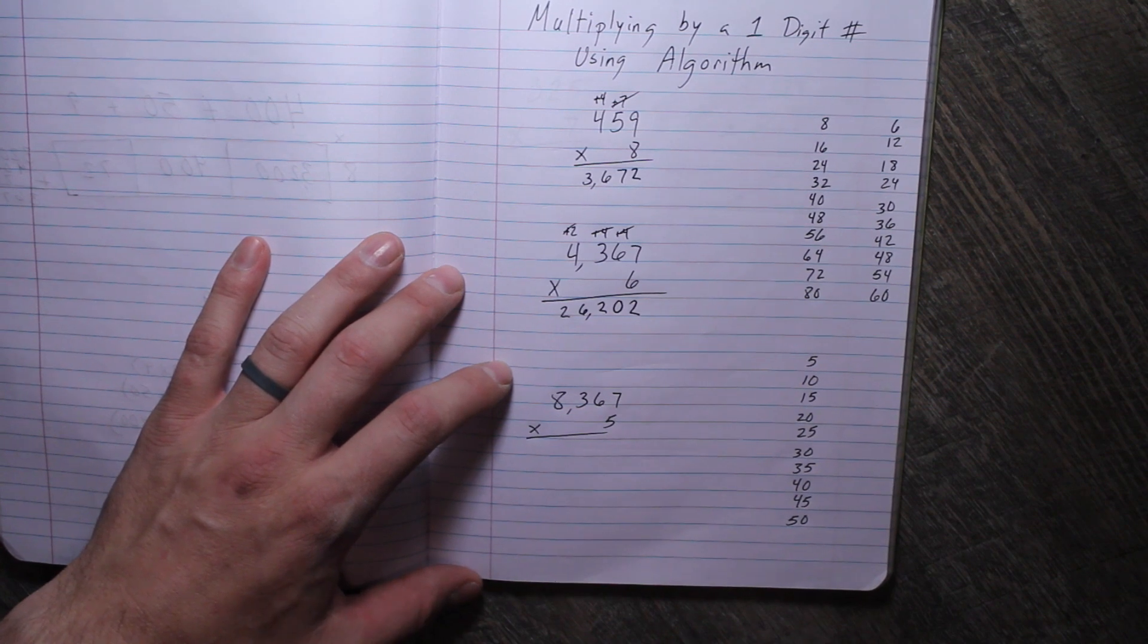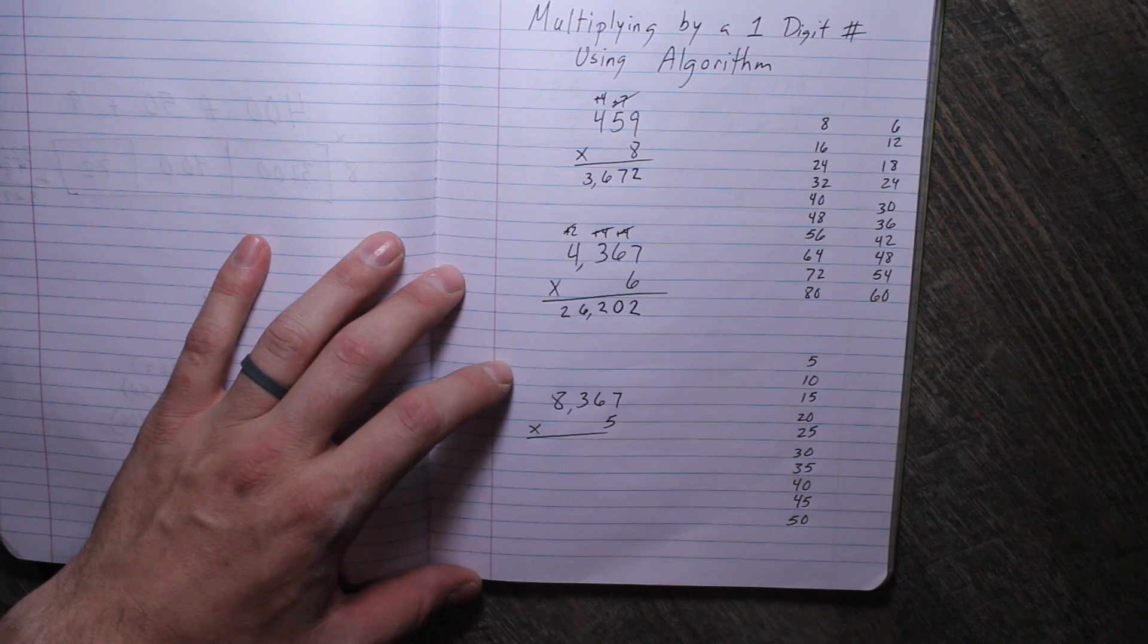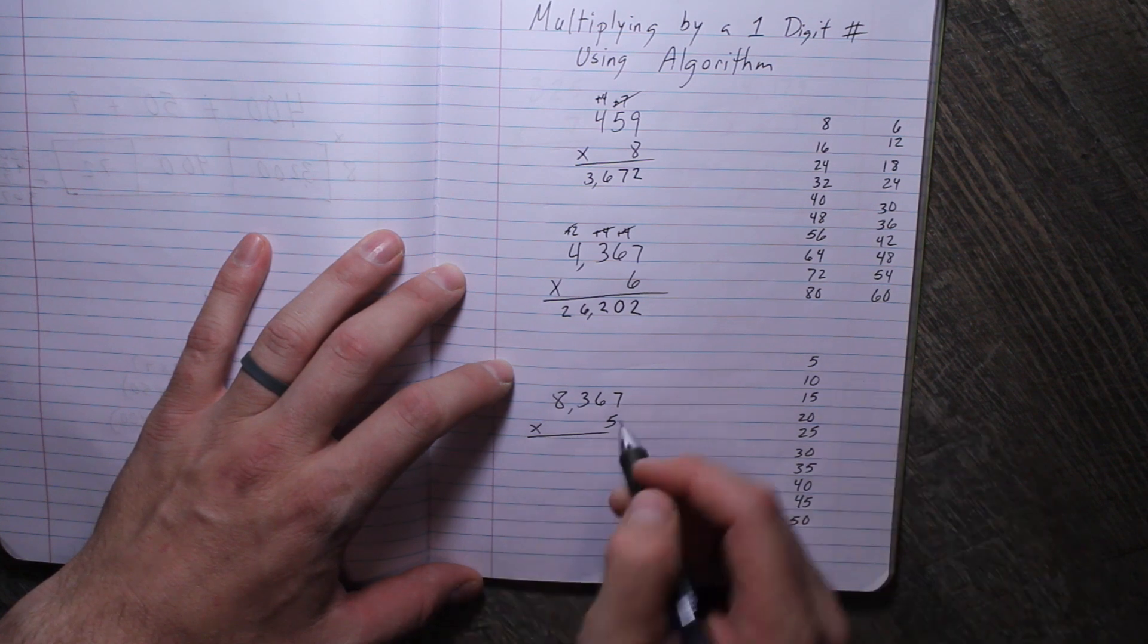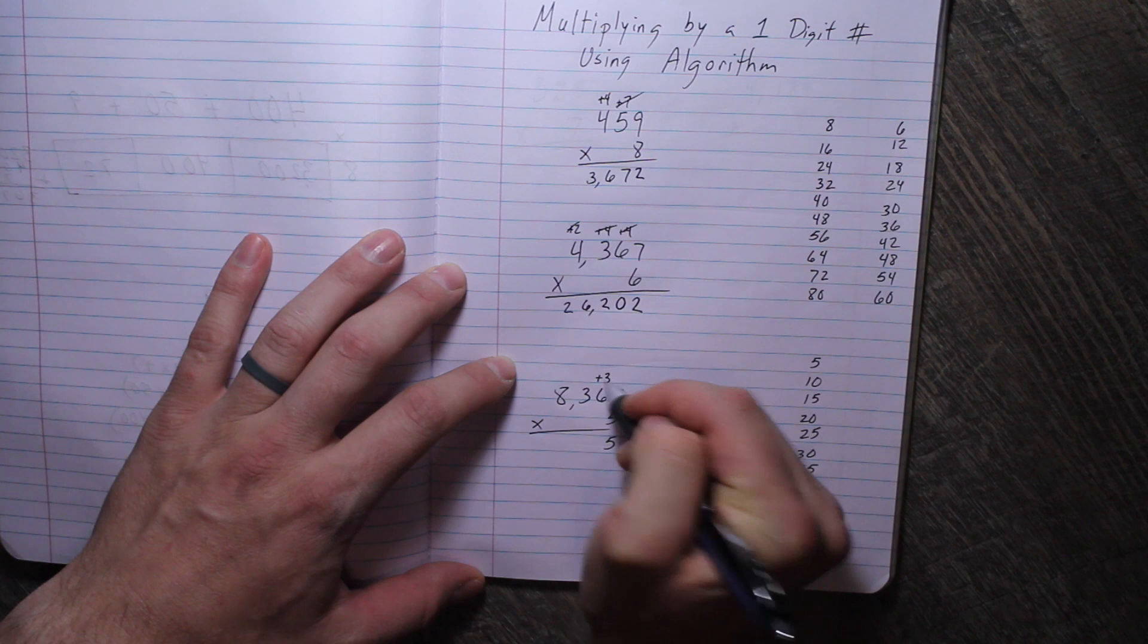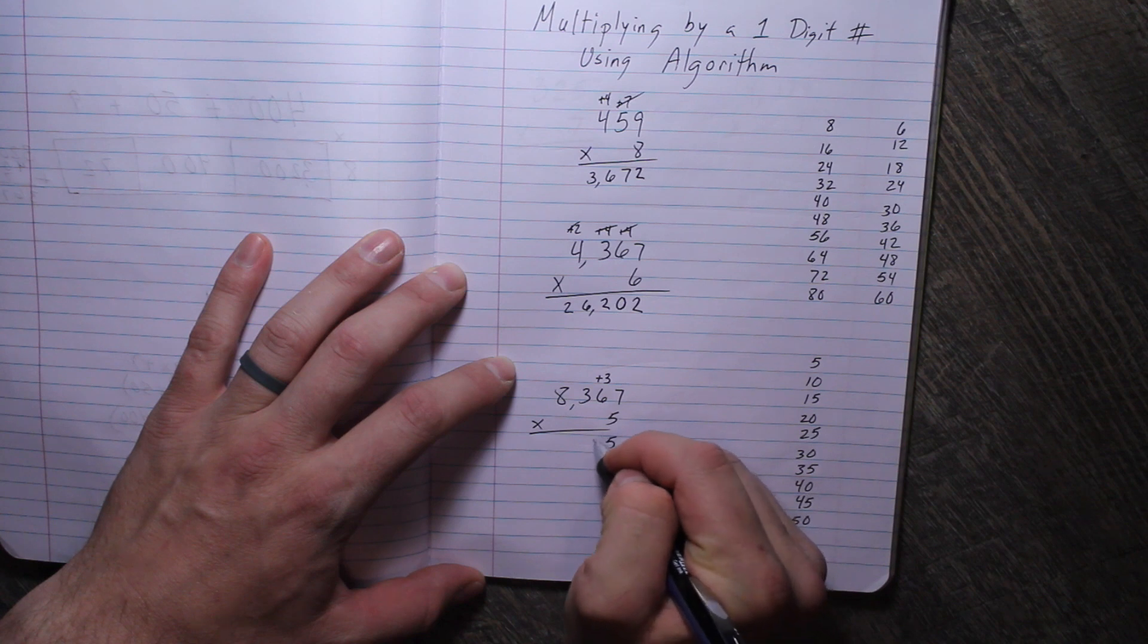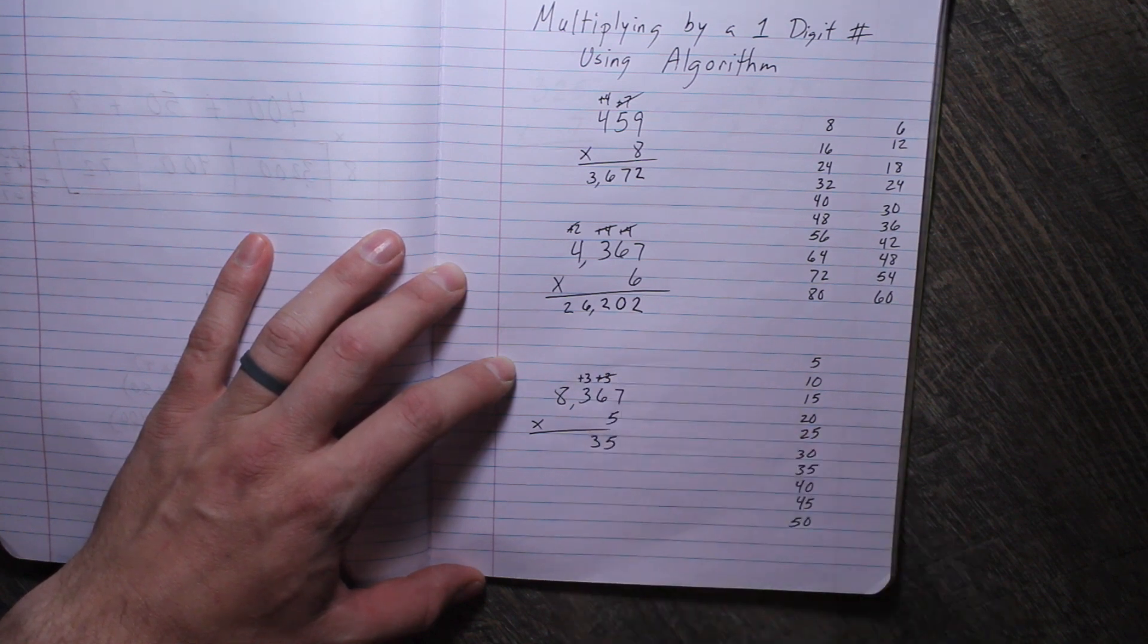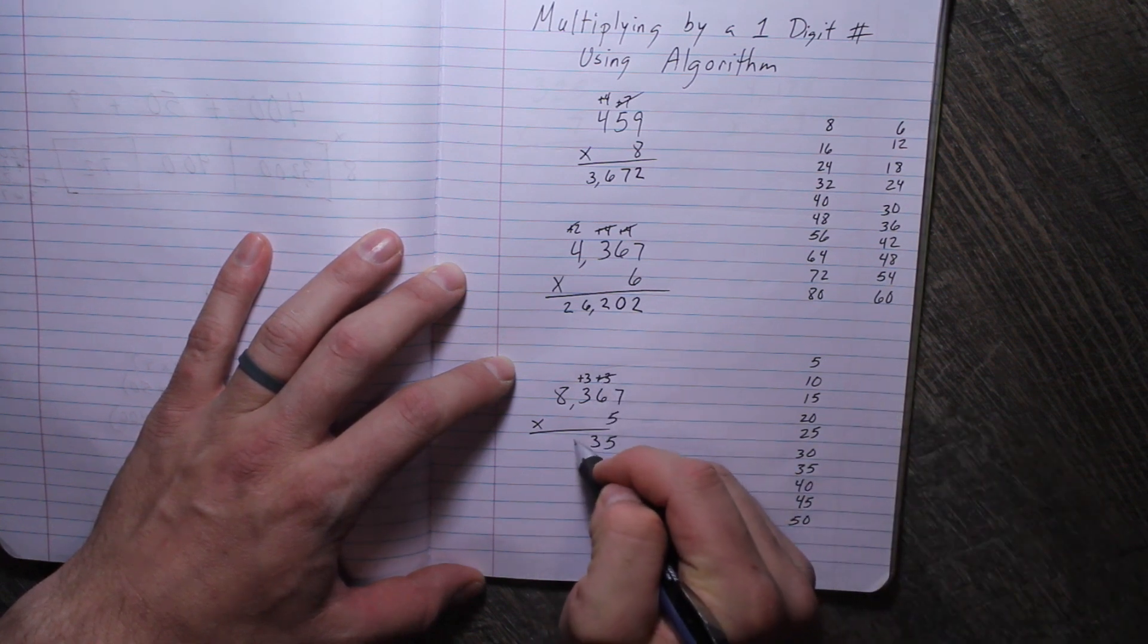Did you pause it? All right, let's get to it. 5 times 7 is 35. I'm going to carry—put the 3 above the tens place. 5 times 6 is 30, plus 3 is 33. Cross that out, we're done with that one. 5 times 3 is 15, plus 3 is 18.